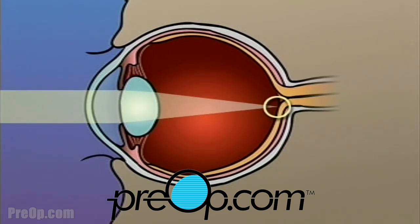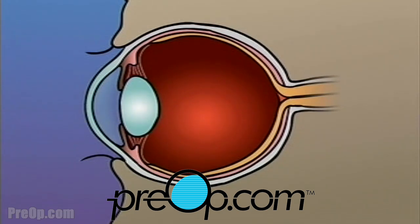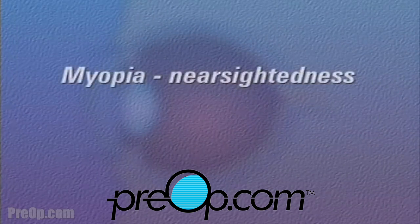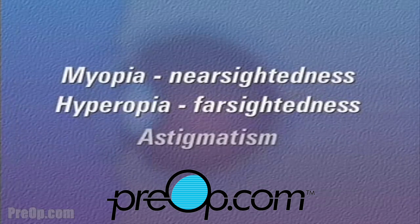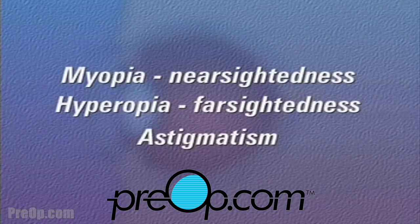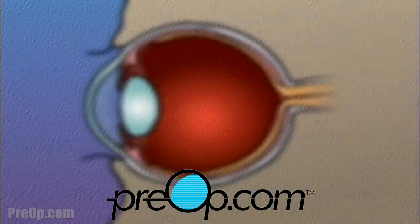There are many common problems that can affect the eye and prevent light rays from focusing properly on the retina. Three of these problems — myopia or nearsightedness, hyperopia or farsightedness, and astigmatism — can often be corrected or reduced with the use of LASIK laser surgery.